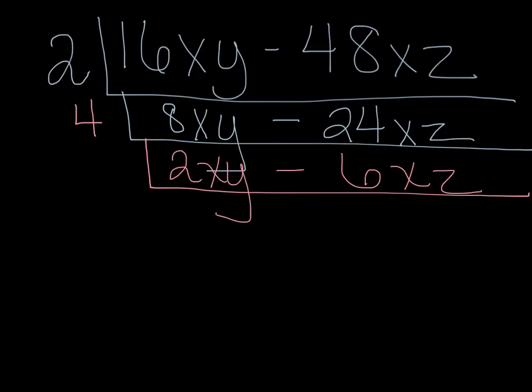The only thing that will go into 2xy minus 6xz is a 2. So let's put the 2 here. 2 goes into 2xy, xy times. Bring down your minus sign. 2 goes into 6xz three times, 3xz.